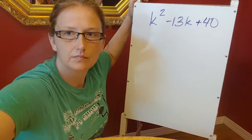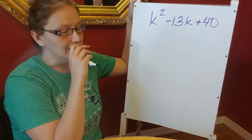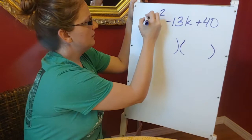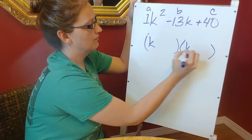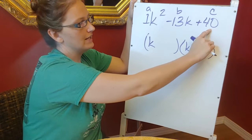Okay, here's my last example. I know I'm starting off with my two sets of parentheses. My a is 1, my b is -13, and my c is 40. So I know k² gives me a k in both of my parentheses, then I need to look at c and what are the factors of c that when I add them together give me a -13.